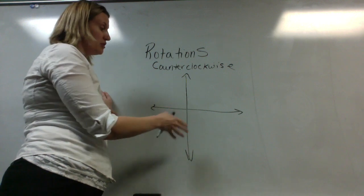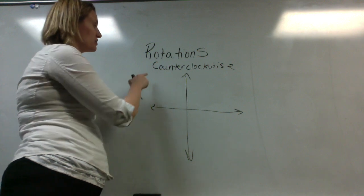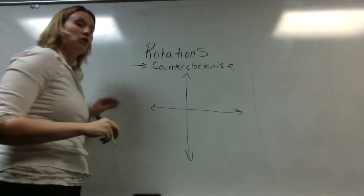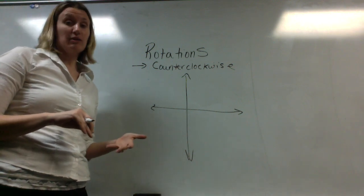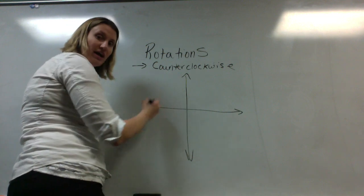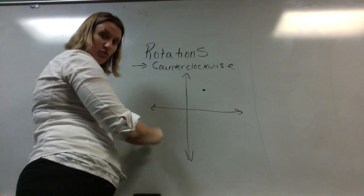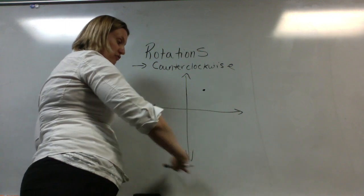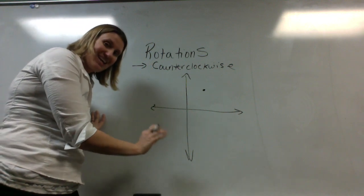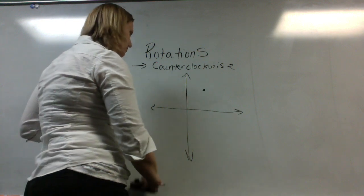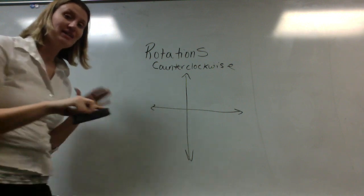Rotations, just like reflection and translation, will take place for our purposes on the coordinate plane. One thing you have to know is that all rotations are going to go in a counterclockwise direction. That is the positive direction of any rotation. If I start in quadrant one, my rotation will go to quadrant two, quadrant three, or quadrant four in that direction — that is considered the positive. If you go clockwise, that's considered the negative rotation. So any time I give you a rotation with a positive number, you are going to go in the counterclockwise direction.